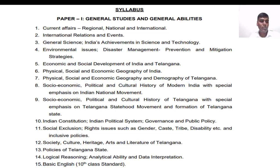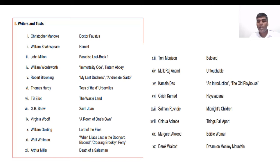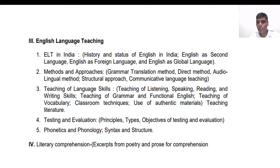Coming to Paper 2, this is the English content paper. We can divide the complete syllabus into three parts: one is the history of English literature; the second part covers writers and prescribed texts — almost 20 writers and 24 texts; and the third part is English Language Teaching, or ELT.